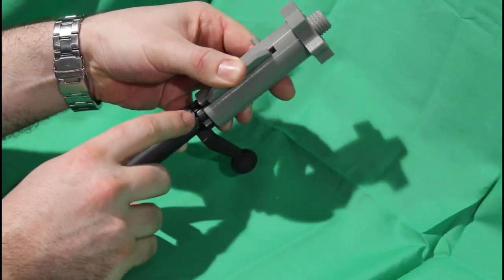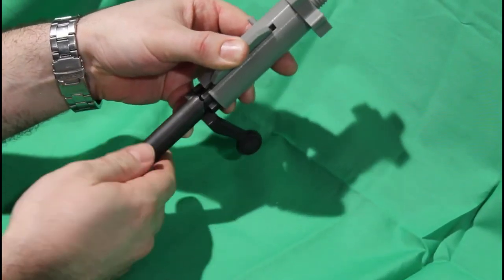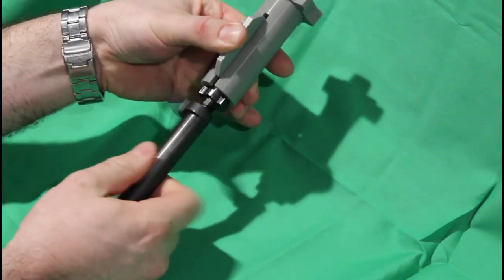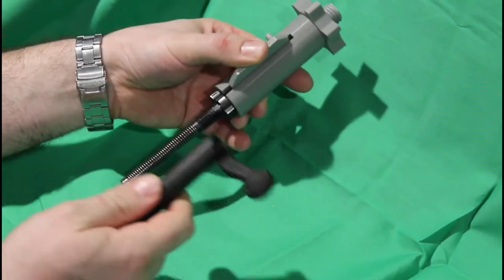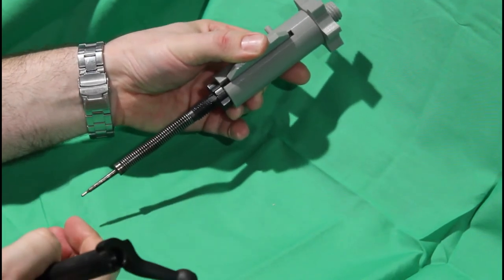That will raise that pin out of that divot right there, which allows you to unscrew the bolt, exposing the spring and the firing pin.